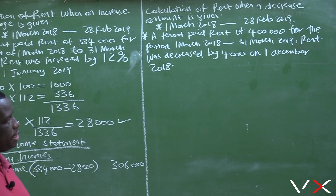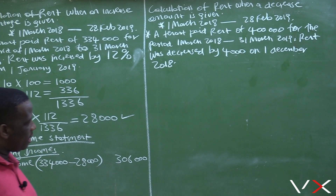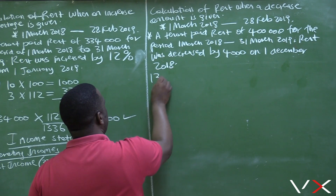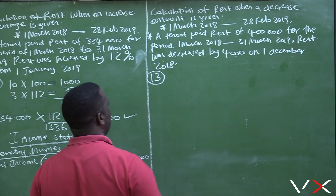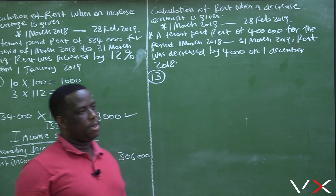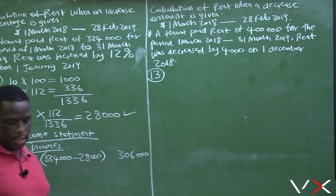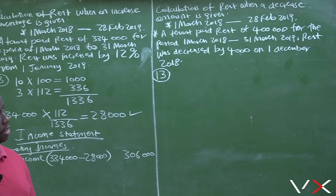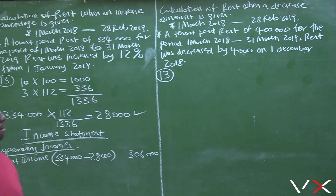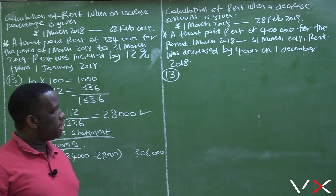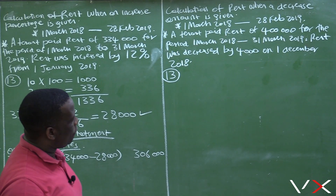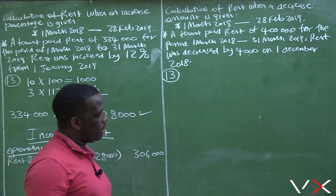So we want to calculate the rent. If you look at this transaction, it is clear that rent has been received in advance for 13 months. But we cannot simply take that four hundred thousand and divide it by 13, because rent has not been the same from the beginning up until the end of the accounting period. There was a decrease of four thousand from the 1st of December.